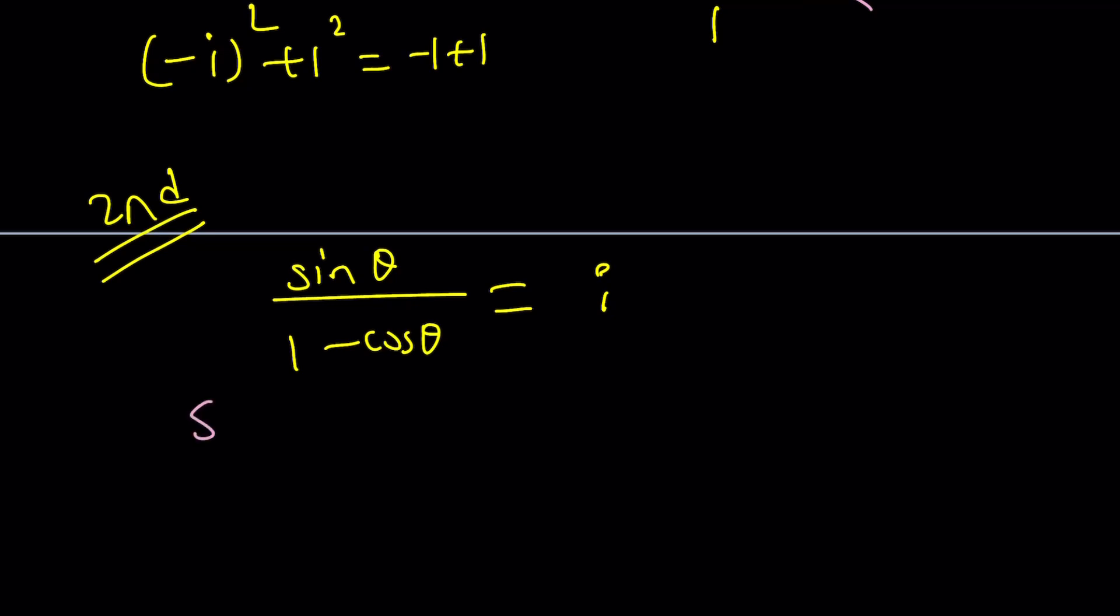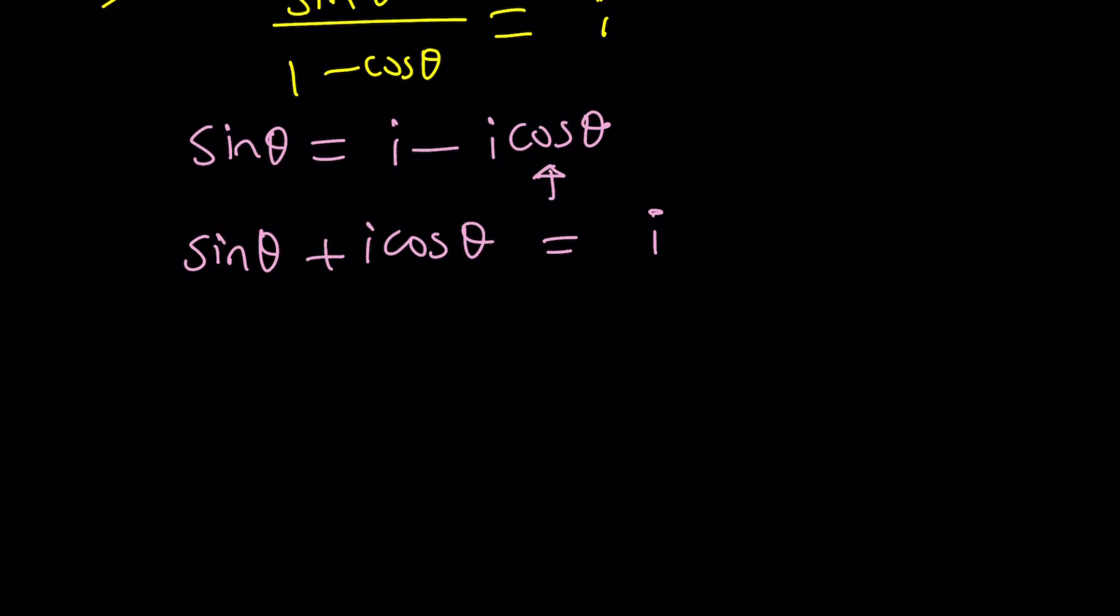So, second method, cross multiply. Something we haven't done before. sin(θ) = i - i cos(θ). You know what I'm going to do? I'm going to put this guy over here on the left so I can use some formulas, which is Euler's formula. Awesome. Now this doesn't fit the general pattern because normally I'm supposed to have cos(θ) + i sin(θ) or cosine something plus i sine something. It's the other way around. But don't worry.